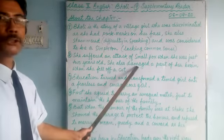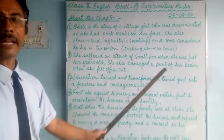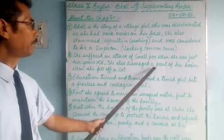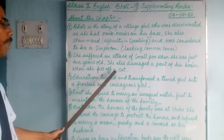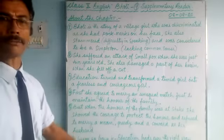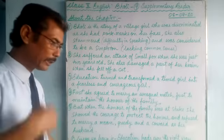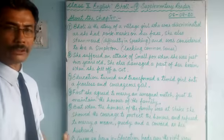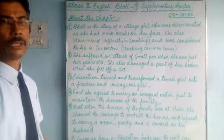She also damaged a part of her brain. This happened because when she was very young — just two years old — she fell off a cot, falling head first. This caused damage to a part of her brain.